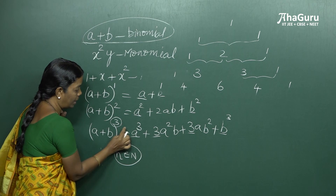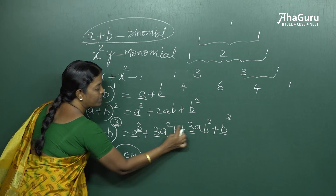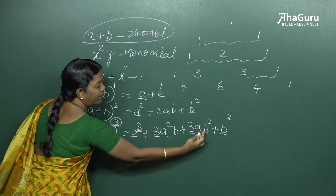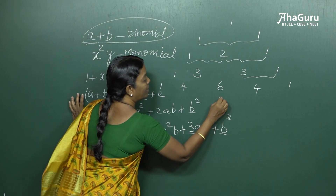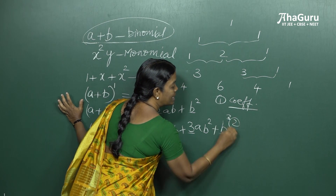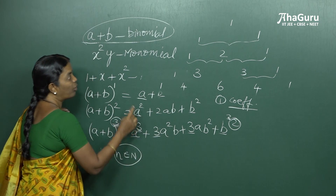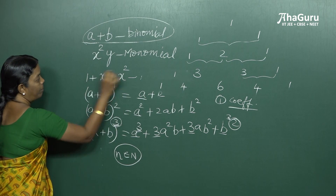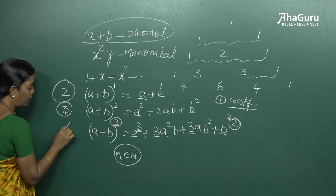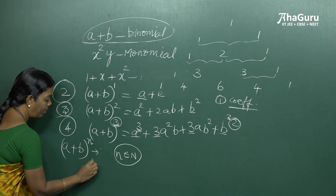Another observation for (a+b)^3: the first term starts with the same power 3, and the power of a keeps decreasing — a cubed, a squared, a, then a to the power 0. Similarly, the powers of b go from b to the power 0, then b, b squared, up to b cubed. In general, the end coefficients are 1, the powers of the first term keep decreasing while the powers of the second term keep increasing. Also, the number of terms for power 1 is 2, for power 2 is 3, for power 3 is 4 — so for (a+b)^n the number of terms is n plus 1.